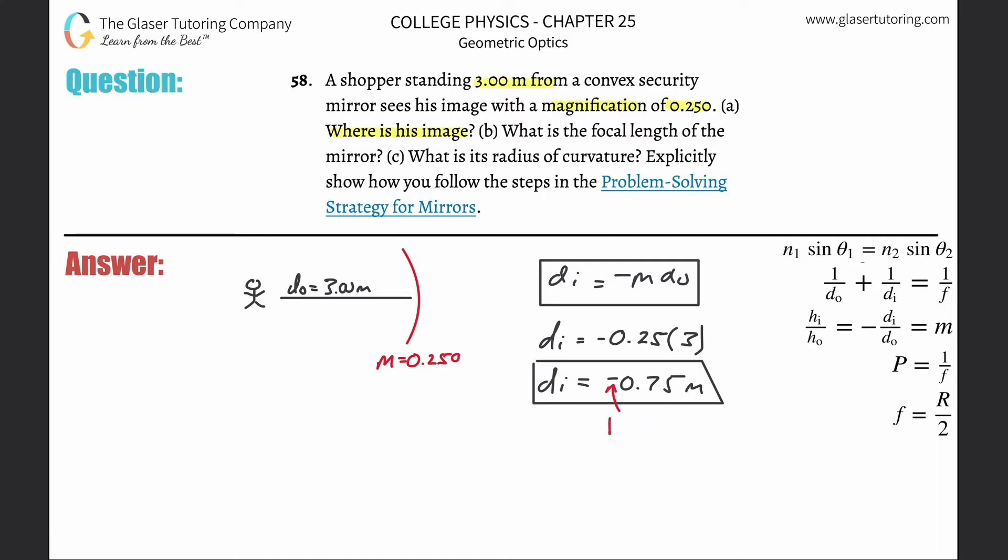Cool. So letter b: What is the focal length of the mirror? Now we can do this in a couple of ways. We could use a formula we derived in a couple of problems ago, or we use our equation here: one divided by the object distance plus one divided by the image distance should be equal to one divided by the focal length.